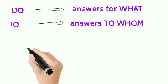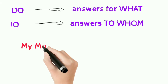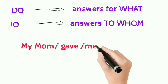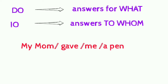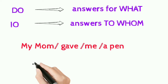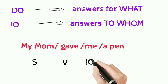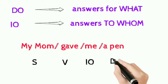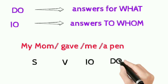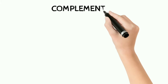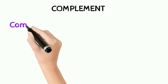Let's see an example. Consider the sentence: 'My mom gave me a pen.' My mom is the doer of an action, so 'my mom' is the subject. The action done by her is 'gave,' so 'gave' is the verb. 'To whom' did she give? — to me, so 'me' is the indirect object. What did she give? — a pen, so 'a pen' is the direct object.